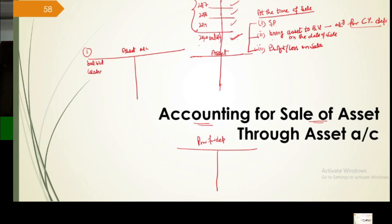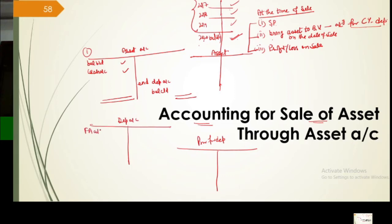Each year balance comes into the asset account. If you happen to buy any asset, that is also recorded here. At the end, you charge depreciation and balance the account. That's what happens. The depreciation charged goes into the depreciation account from the asset account at the end, and then you transfer it to the P&L account.